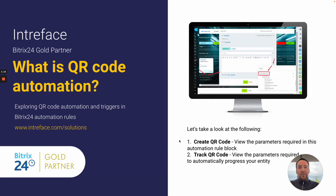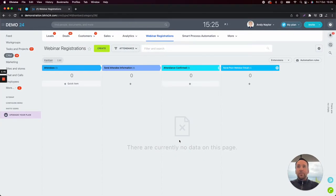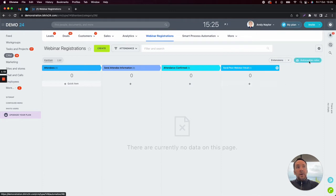I'll be running through that example in a moment. What they also enable you to do is track the ability of a user or a customer scanning that QR code to automatically move that entity along in your sales process, or in our demonstration shortly, in the webinar registration process. So let's take a look inside Bitrix. On the screen here, we have created a smart process automation to track our webinar registrations. So let's take a look at our automation rules.